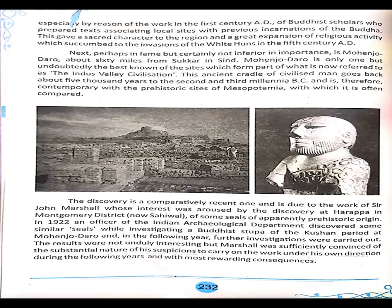The second treasure — though in no way inferior to the first — is Mohenjo-daro, which is about sixty kilometers from Sukkur in Sindh. Mohenjo-daro is only one, but undoubtedly the best known, of the sites which form part of what is now referred to as the Indus Valley civilization. This ancient cradle of civilized man goes back about 5,000 years to the second and third millennia before Christ, and is therefore contemporary with the prehistoric sites of Mesopotamia, with which it is often compared.